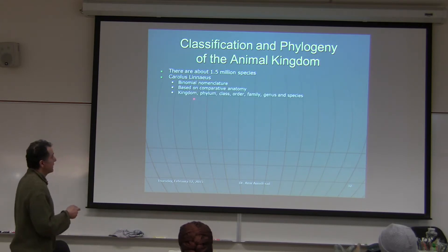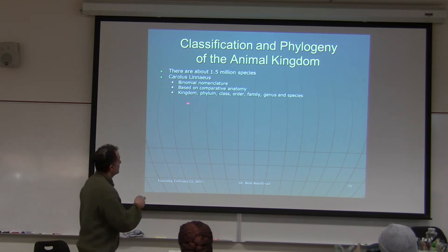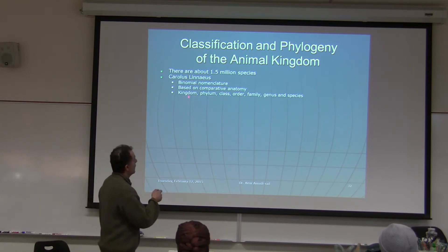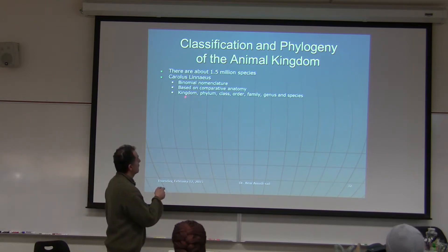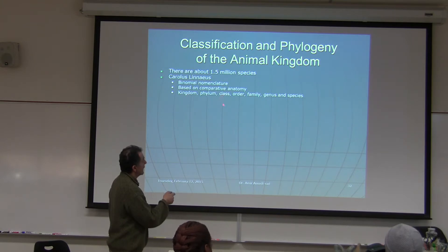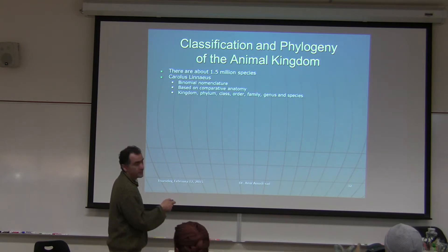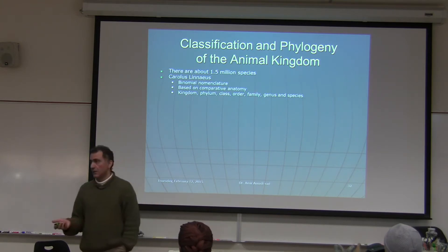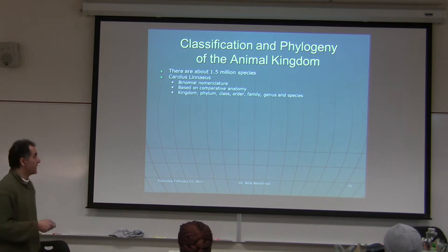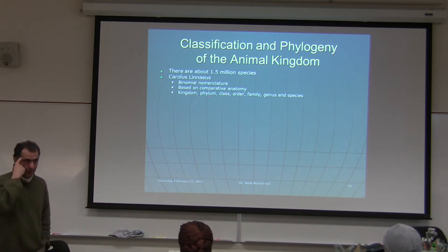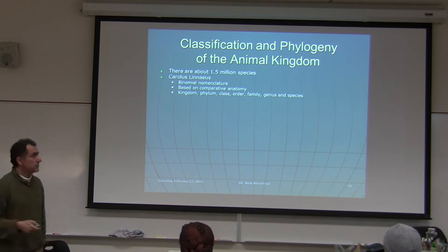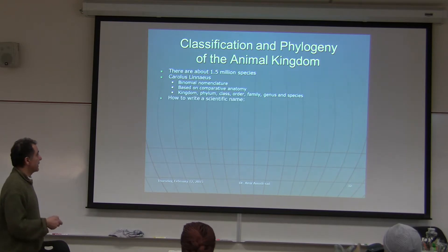The levels of classification are: Kingdom, Phylum, Class, Order, Family, Genus, Species. A mnemonic to remember this is: 'King Paul Came Over For Good Sex.' That makes it easy to remember.